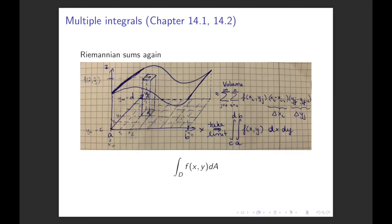If we take the limit — so if our partition becomes very fine and we have infinitely many little area pieces — we get the integral: the integral from a to b in x-direction and over that the integral c to d in y-direction. You are replacing the sum by the integral in the limit. The two integrals summing up x and y directions are written as one integral over the whole domain, where dA is our area element dx times dy, varying over both x and y to cover the whole rectangle.